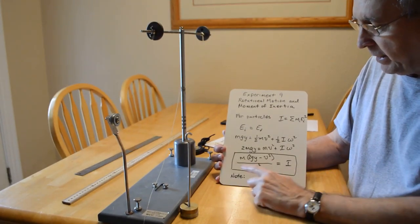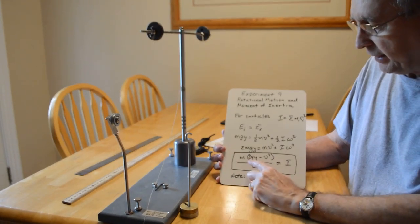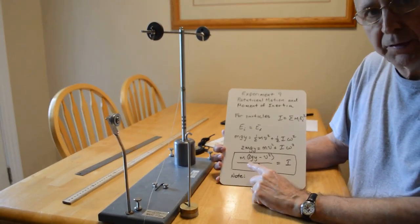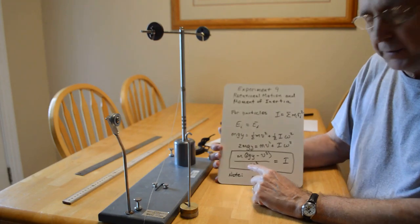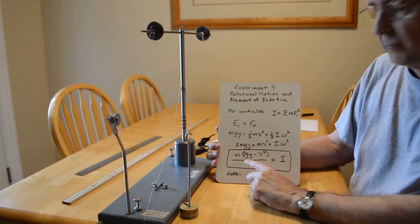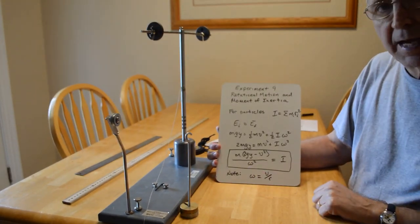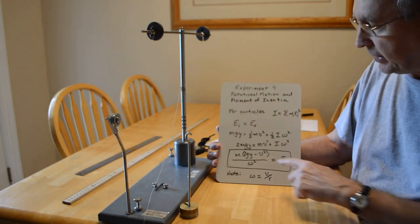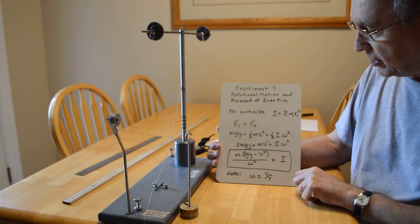When you do your calculations, we're using CGS units, so don't forget to use 980 centimeters per second squared for g.